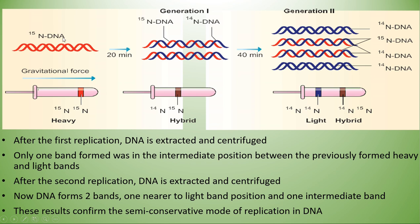Nitrogen-15, being a heavy isotope, is denser and present at the bottom of the centrifugation tube. After 40 minutes — the second generation — the DNA is again extracted and centrifuged, producing two different bands. One band is in the intermediate portion containing the nitrogen-14 and nitrogen-15 hybrid DNA, and another band contains only light isotope nitrogen-14 DNA strands. This confirms semi-conservative DNA replication, where one parental and one new daughter strand are retained.